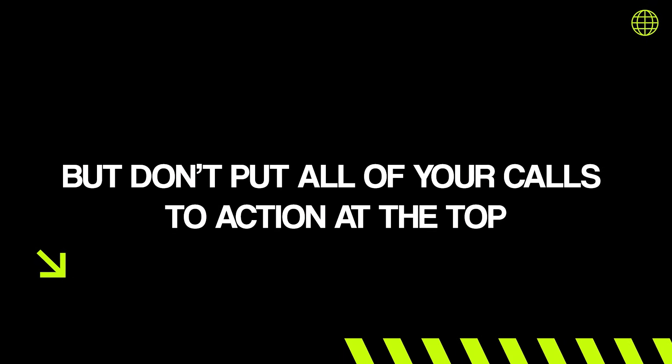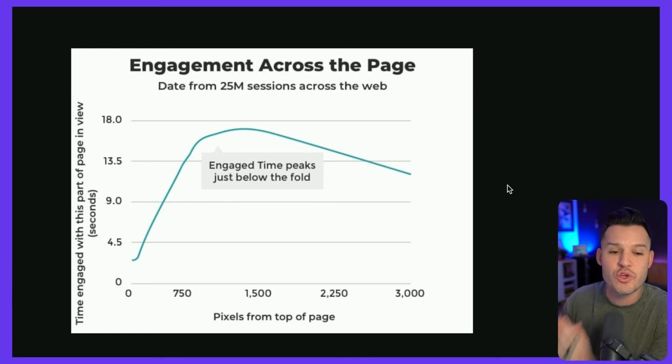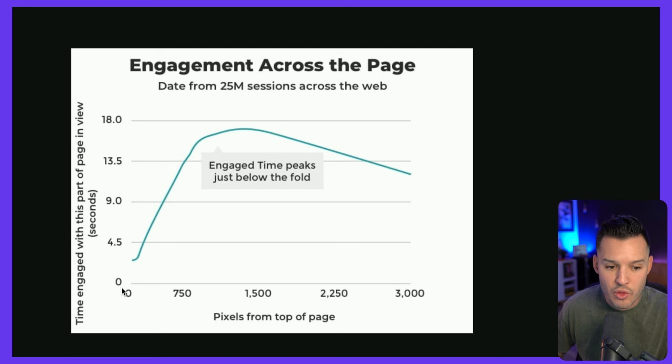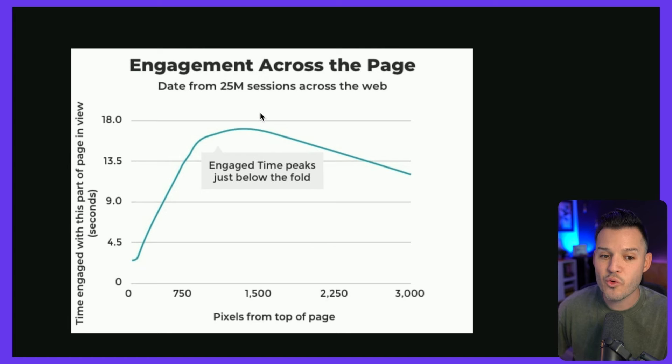One of the mistakes a lot of designers make is to only place calls to action in the top section of their website — in the hero or masthead — and then leave them out in the subsequent sections below the fold. That's actually problematic because a company called Chartbeat analyzed 25 million website visits and here's what they found. From 25 million sessions across the web, the longer a user stays on a website, the more engagement actually takes place in the lower regions of the page.